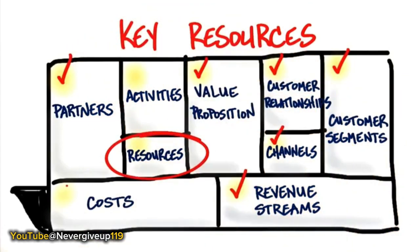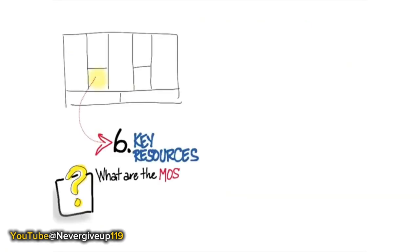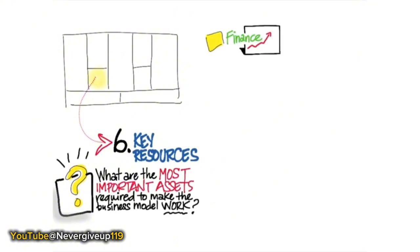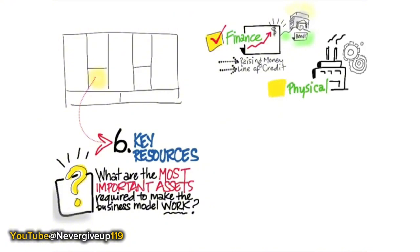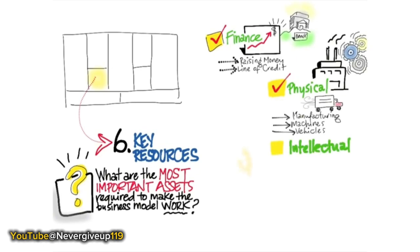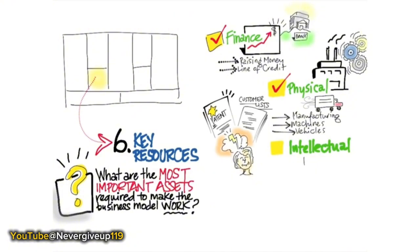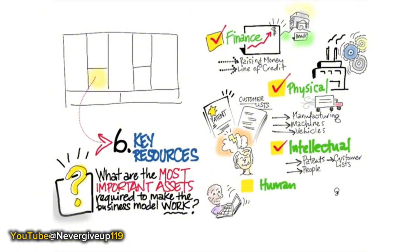For key resources, the real question is: what are your most important assets to make your business model happen? For every startup, the thing you're always worried about is money, finance. How do you get the company started? Can you do it on your credit cards? Do you need a line of credit? Do you have a small business loan? Or then physical resources — do you need a manufacturing line, machines, cars, vehicles? And how about intellectual property? Are patents critical to defending your position? Or is it customer lists? Or is it people?